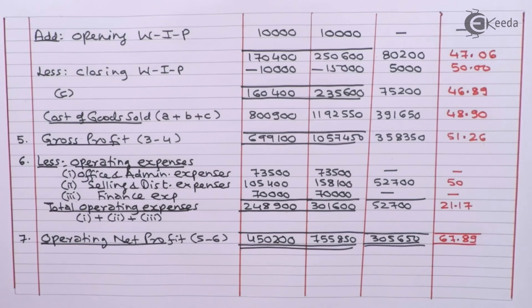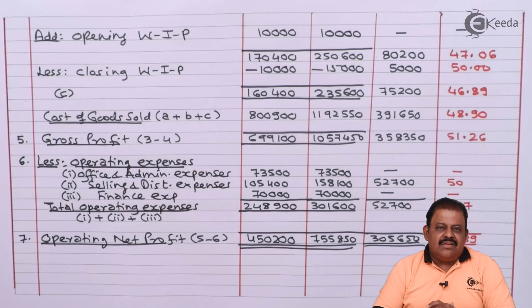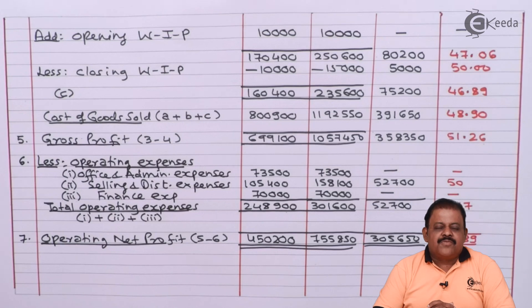In this question we have prepared a vertical comparative income statement with the help of details given in the question, where a horizontal income statement was not given. Thanks for watching this video — stay tuned with Ikeda and subscribe to our channel Ikeda. Thank you.